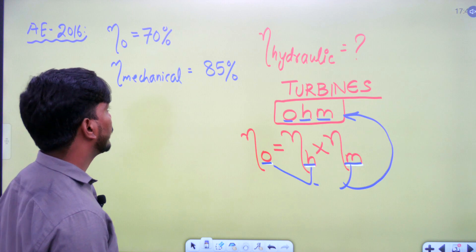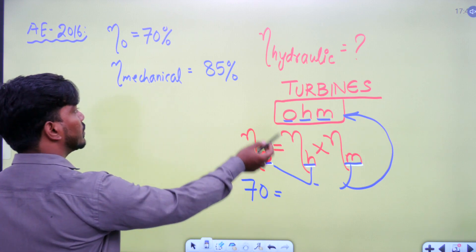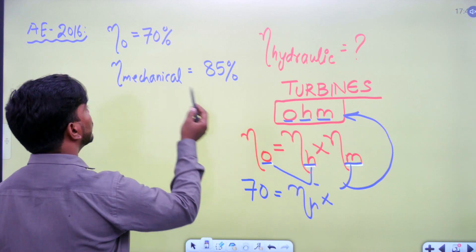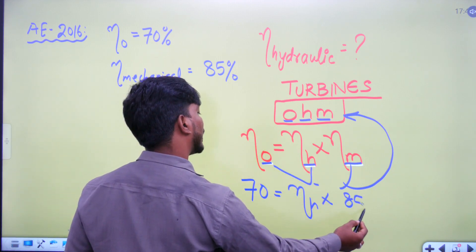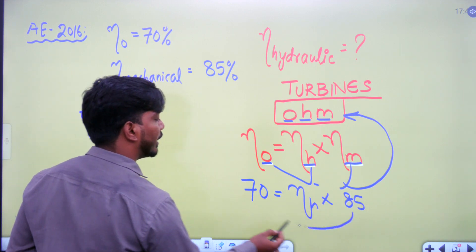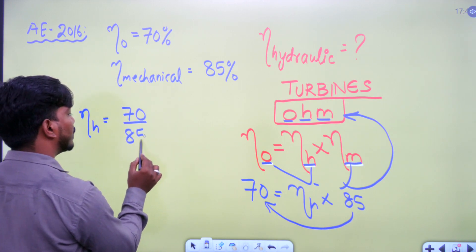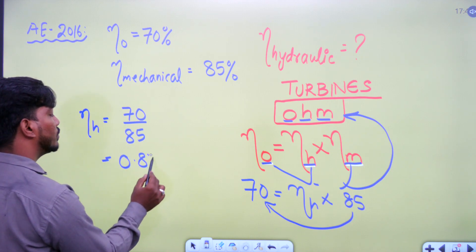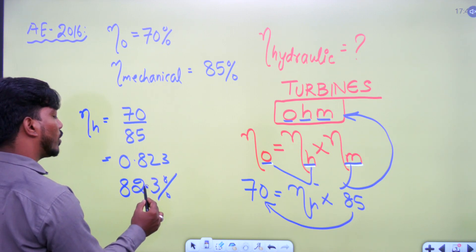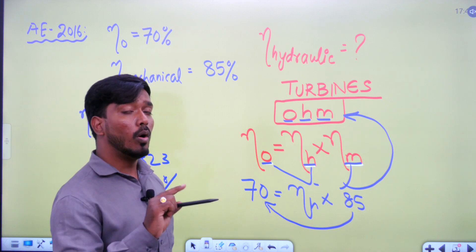For example, if overall efficiency is 70% and mechanical efficiency is 85%, then hydraulic efficiency equals 70 divided by 85, which gives approximately 0.823, or about 82.3%. You can verify based on the answer options. This type of question is easy to solve when you remember the OHM relationship.